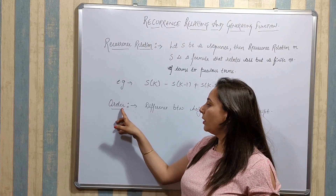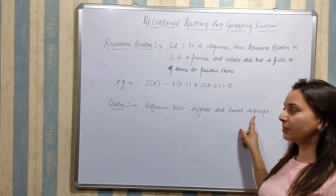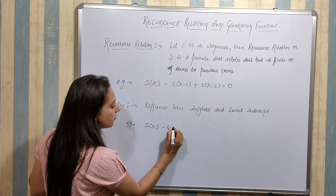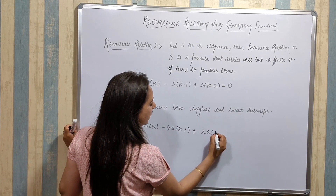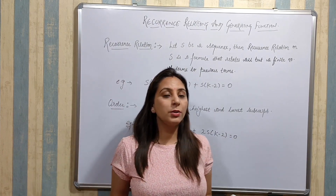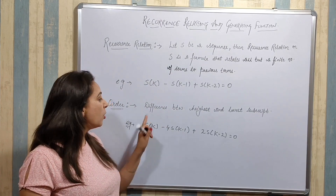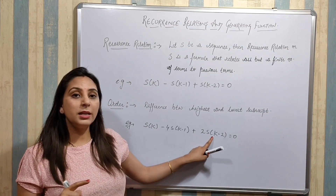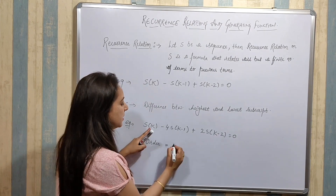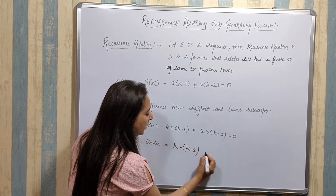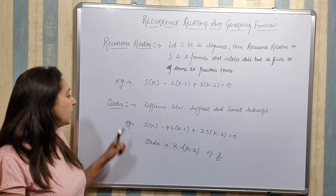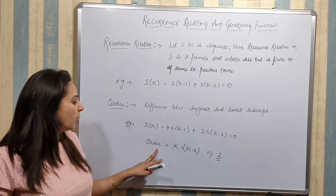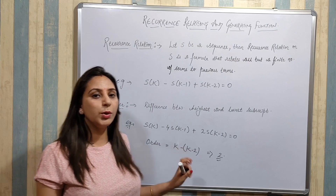Now the definition of order: order is the difference between the highest and lowest subscript. For example, for the recurrence relation S(K) minus 4·S(K-1) plus 2·S(K-2) equals 0, the highest subscript is K and the lowest subscript is K minus 2. Therefore, order equals K minus (K-2), which equals 2.